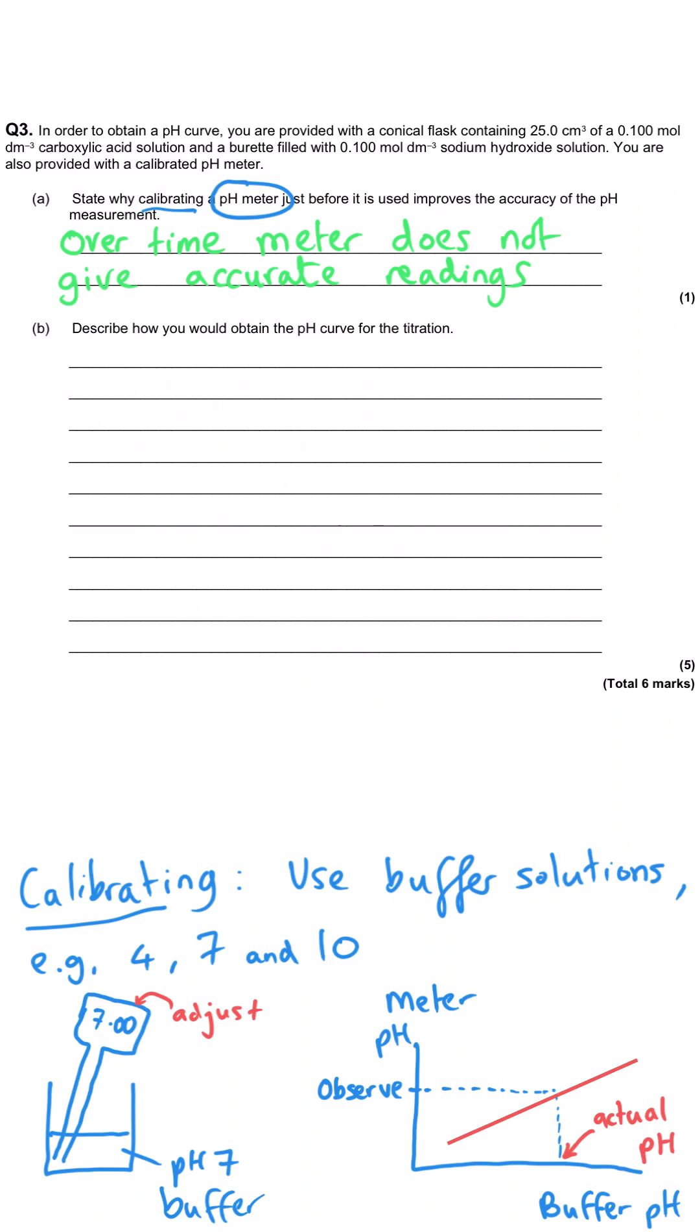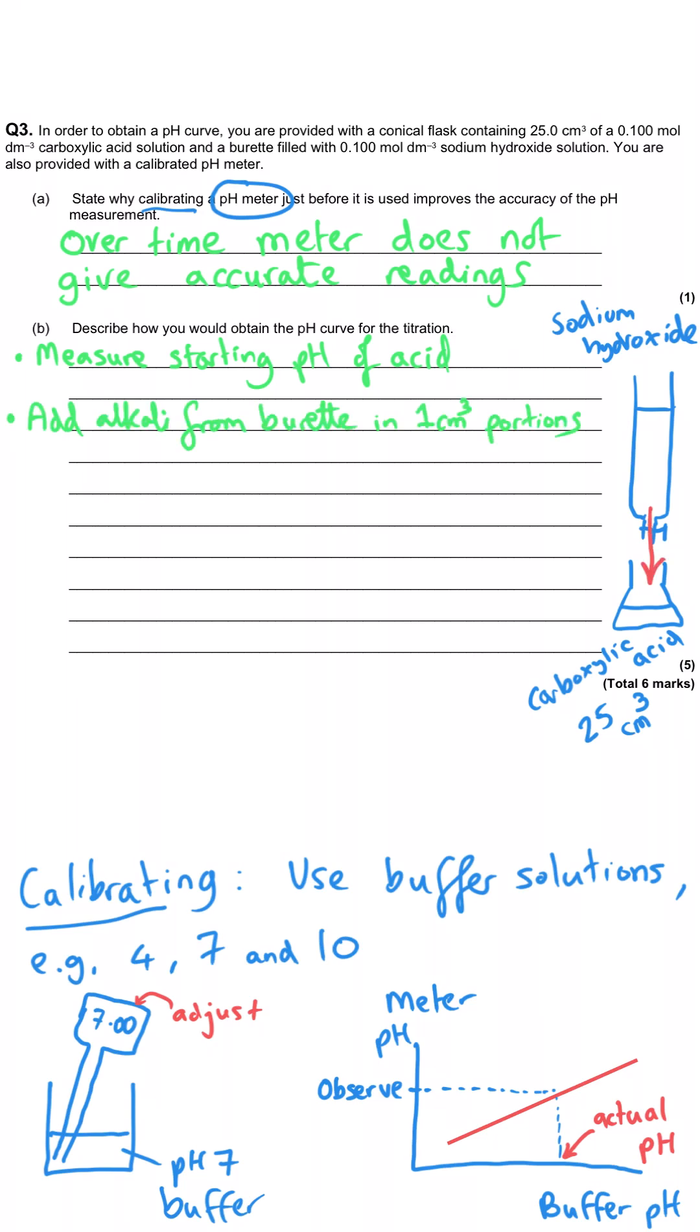And so we're being asked how we would do the actual titration itself, and so the idea is that in the conical flask we've got our carboxylic acid, 25 cm cubed, and the sodium hydroxide would be in the burette. And so what we would do is we would measure the starting pH of the acid. We would then add the alkali from the burette in known portions, anything from 1 cm cubed to 2 cm cubed. And with each addition, we would need to stir the mixture or swirl the mixture to make sure the reaction had been thorough. Then we'd measure the pH after the addition. Then we would repeat, and then we'd measure the pH. Keeping repeating until that alkali is in excess.